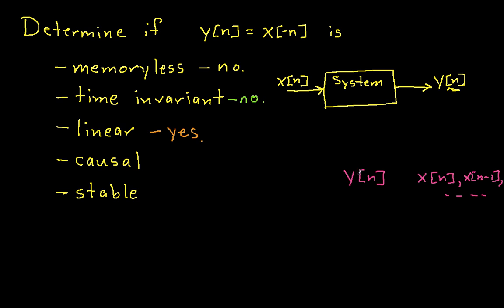Now in this case, as you recall, when we first started talking about it, when n is positive, then the system does look to its past to determine the output. But when n is negative, the system is looking into the future to determine what its output is. So this system is not causal because causal systems don't look into the future.